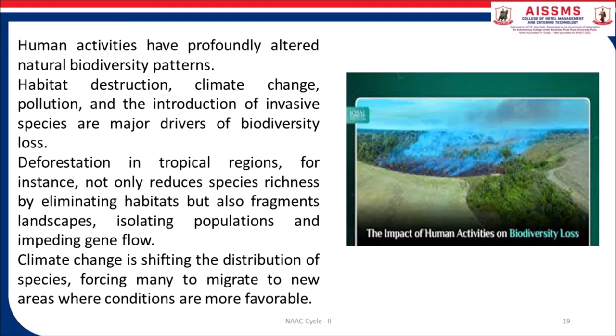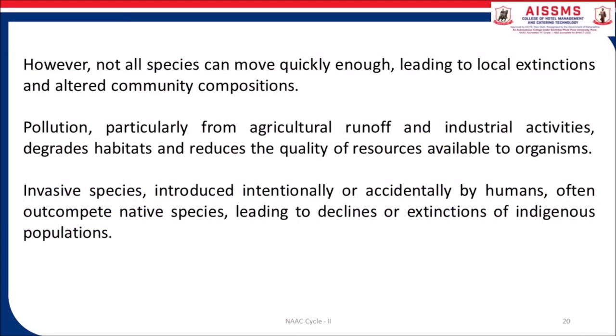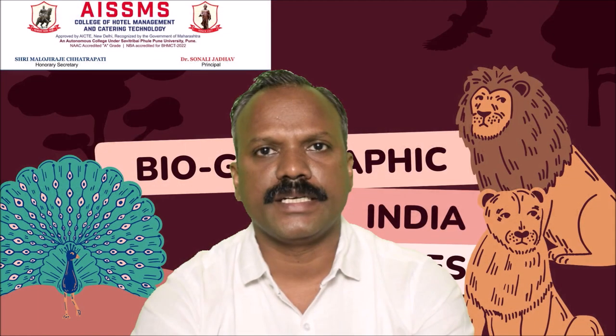Climate change is shifting the distribution of species, forcing many to migrate to new areas where conditions are more favorable. However, not all species can move quickly enough, leading to local extinction and altered community compositions. Pollution, particularly from agricultural runoff and industrial activities, degrades habitats and reduces the quality of resources available to organisms. Invasive species introduced intentionally or accidentally by humans often outcompete native species, leading to declines or extinctions of indigenous populations.